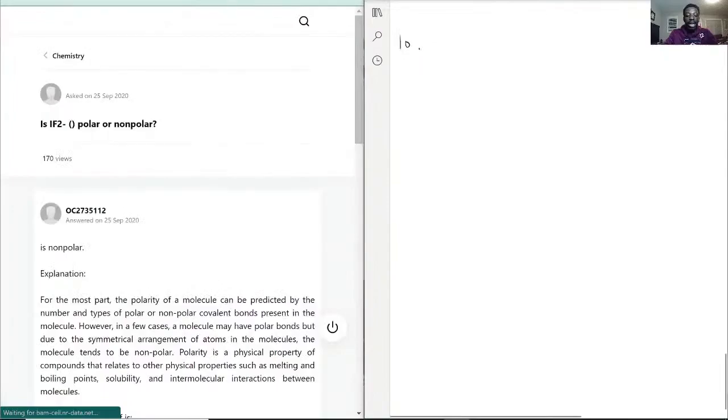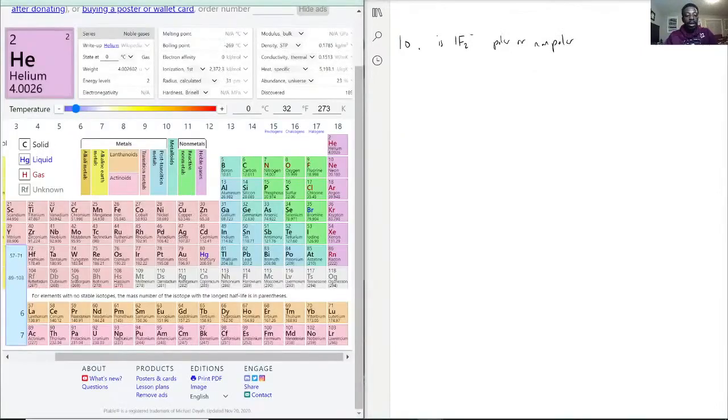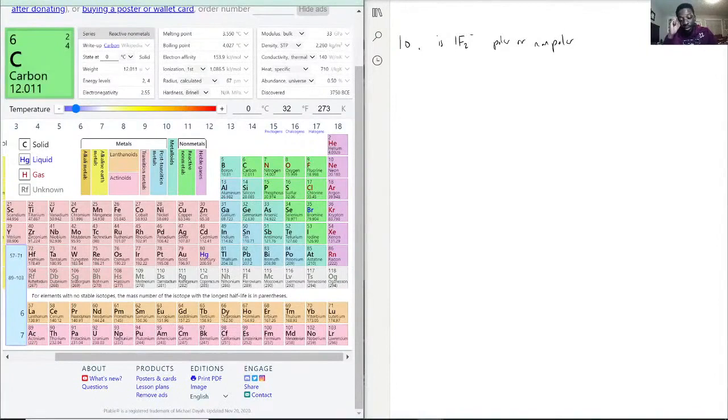This question is asking if IF2 minus is polar or nonpolar. This one's a little bit tricky because we need to first draw out its Lewis structure and then from there we'll see whether it's actually polar or not. With that being said, we're going to first figure out how many electrons are in the valence shell for iodine and fluorine.